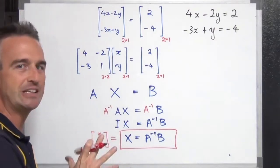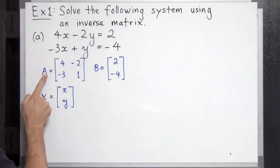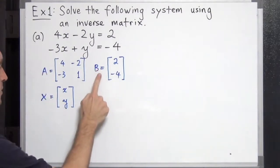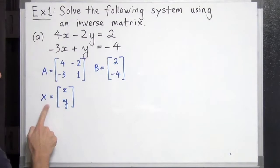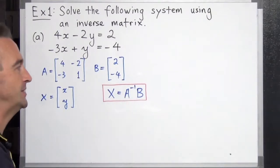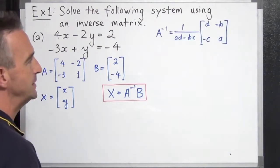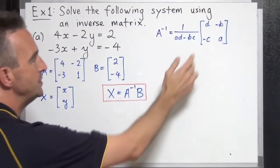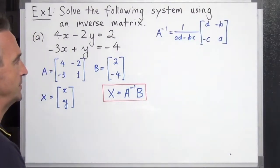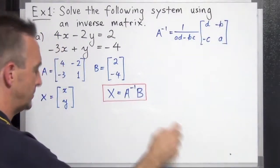Make sure you understand this before moving on. Now back to Example 1A. We have our coefficient matrix, our matrix of constants, and our matrix of variables, just like we saw. To solve the system for x and y, we use the formula X equals A inverse times B. Since we're dealing with a 2 by 2 system, let's use the formula to find the inverse matrix — remember it's 1 over AD minus BC.